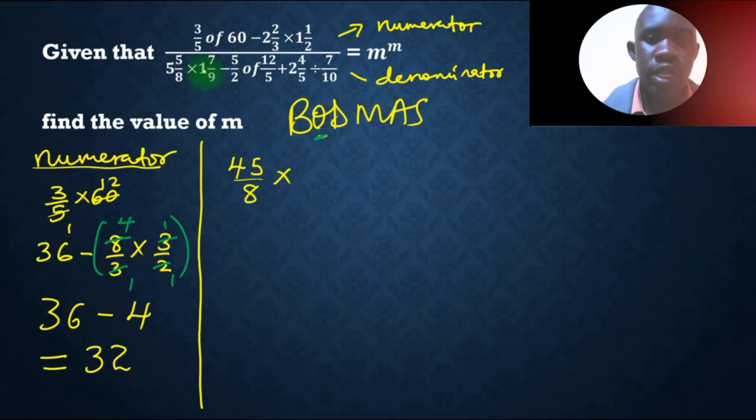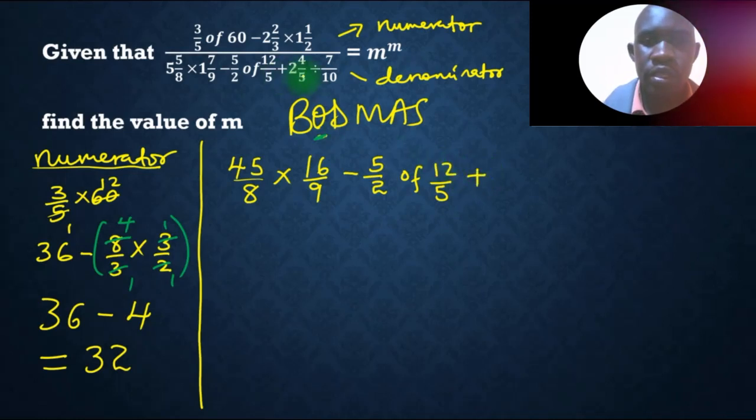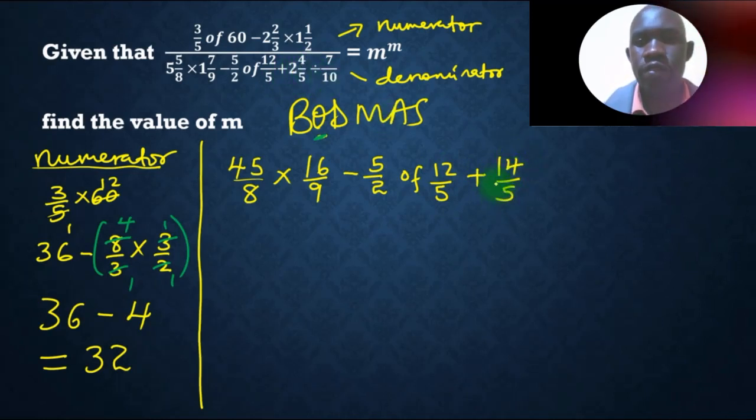Then multiply by, this is 9 times 1, which is 9 plus 7, that is 16 over 9. Then minus 5, that is 5 times 2, that is 10, 10 plus 4, that is 14 over 5. Then divide by, that is 7 over 10.